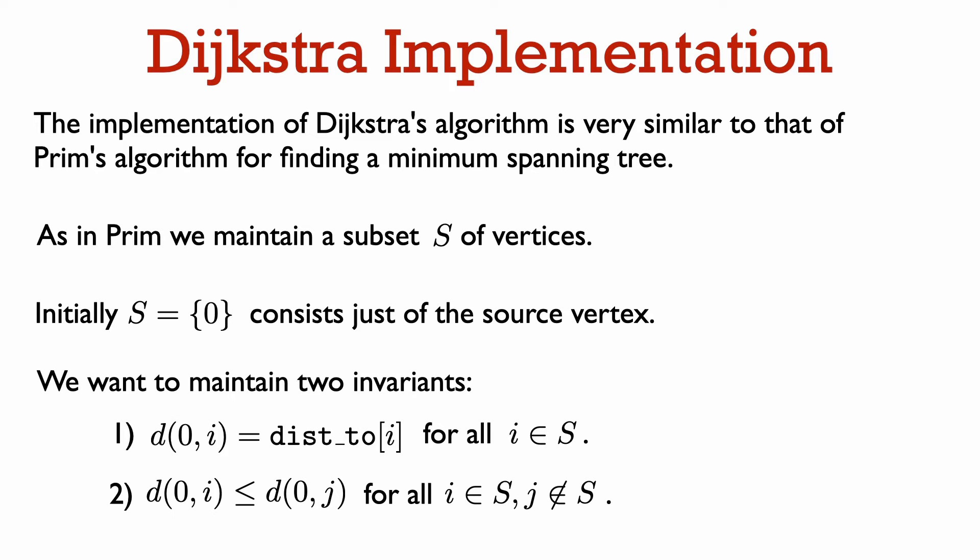We maintain two invariants of the set S. First, our estimate of the distance from vertex 0 to vertex i — that is, dist2 of i — is actually correct for every vertex i in the set S. The second invariant is that vertices in S are closer to vertex 0 than any other vertex not in S, or at least not further. This gives us the property that we go over the vertices in order of their distance from 0. Note that both invariants are satisfied at the start when S is just the source vertex 0. We initially set dist2 of 0 to be 0, and since edge weights are positive, 0 is the closest vertex to 0.